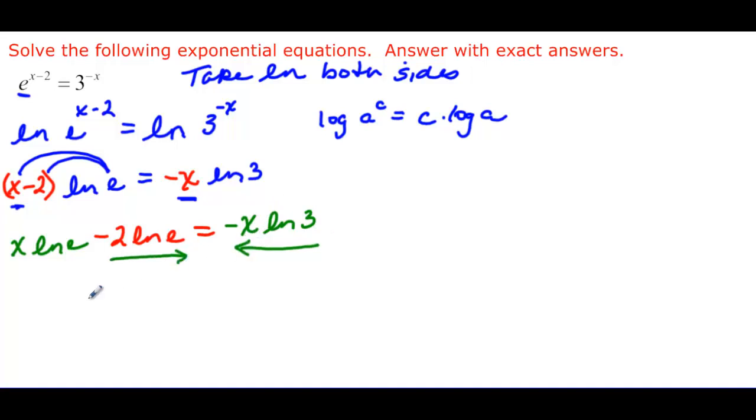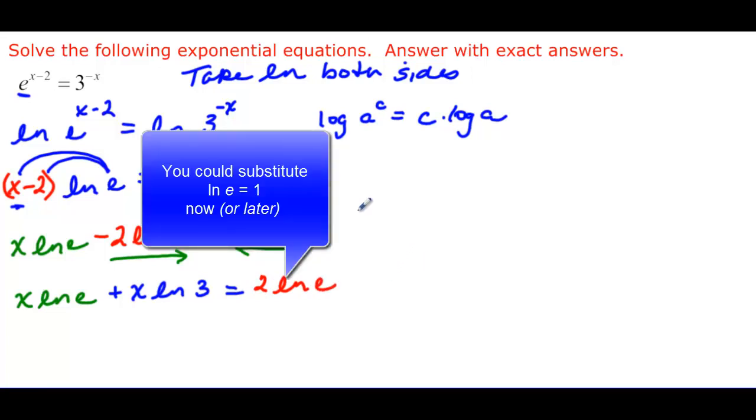Which the x ln e stays on this side. And then I end up adding x ln 3. And that will be equal to, when I add, it's 2 positive 2 ln e. So again, what did we do up here? We collected the x's on one side.